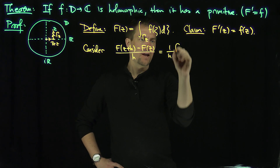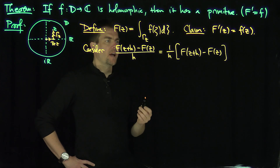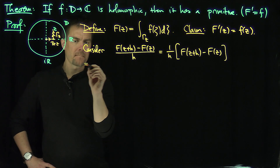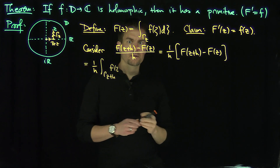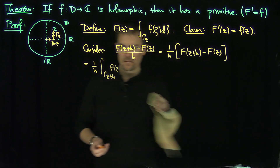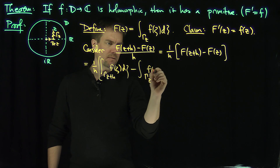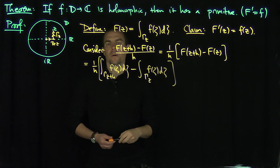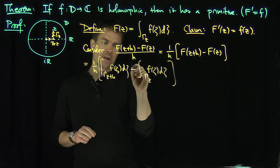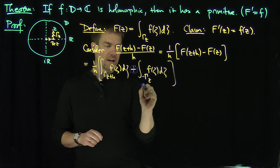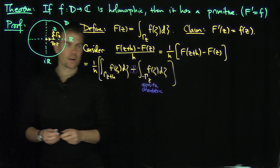This is going to be 1 over H times the difference of F of Z plus H minus F of Z, which equals 1 over H times the integral over gamma of Z plus H of F of zeta d zeta, minus the integral over gamma Z of F of zeta d zeta. Now, the essential idea is that whenever you have a negative sign in front of an integral, I can turn that into a plus if I take the curve and give it the opposite orientation. So I put a plus between those two things and look at the curve in the opposite orientation.